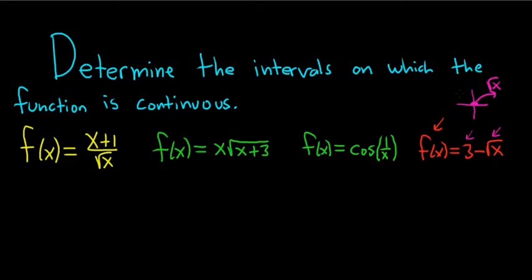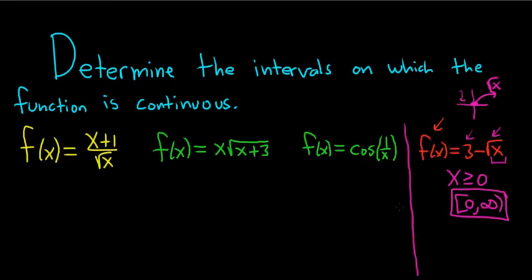The only time it's not continuous is where it's not defined. So the domain for the square root function is all of the x's that are greater than or equal to 0. So in this case, the function is continuous everywhere in its domain, so 0 to infinity. So that would be the answer to the last part over here.